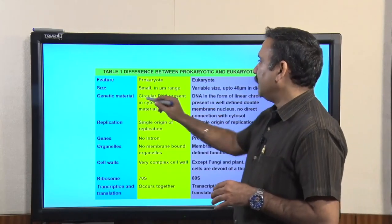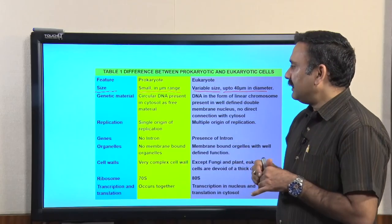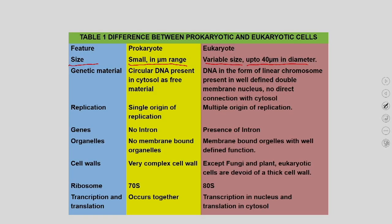Prokaryotic and eukaryotic cells have distinguishing and significant differences important to understand so you can exploit them and choose a suitable host for downstream applications. Prokaryotes are small in size — in the micrometer range — whereas eukaryotes are of variable size, from 10 to 30 micrometers or larger. For genetic material, prokaryotes have a single circular chromosome, whereas eukaryotes have DNA in the form of linear chromosomes inside a double-membrane organelle called the nucleus. Apart from the circular DNA, prokaryotes also have extrachromosomal DNA called plasmids.